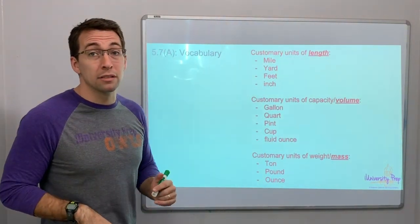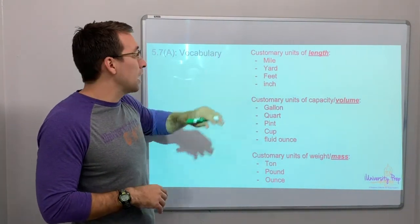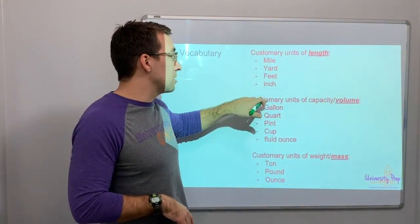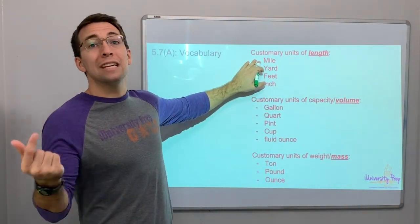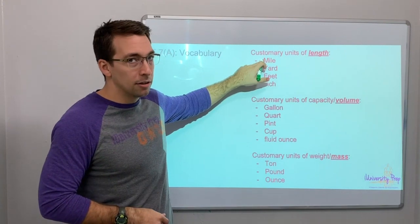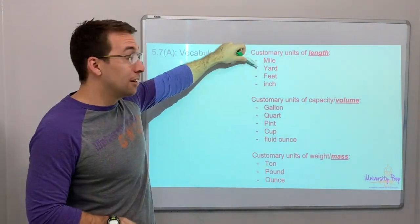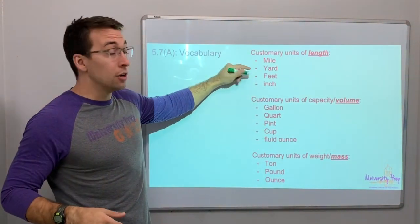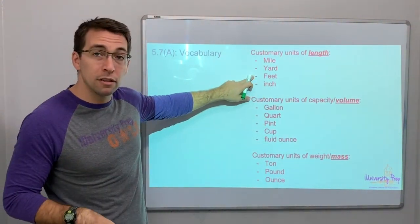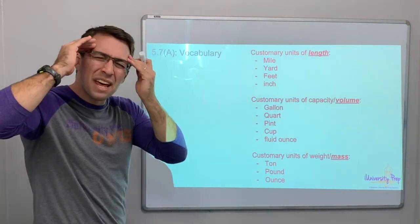You have to know the customary units. This is from biggest to smallest. Mile, yard, feet, inches. And you've got to know there are 5,280 feet in a mile. There's 1,760 yards in a mile. There's 3 feet in a yard. There's 12 inches in a foot. There's 36 inches in a yard. You've got to know that. That's facts.